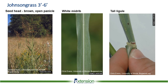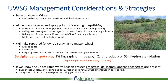Johnson grass is another undesirable that becomes obvious later in the season as it reaches three to six feet in height — it really sticks out and can be seen from a long ways away. It has a brown open panicle for a seed head, a very distinctive white midrib, and a tall ligule. Johnson grass is fairly easy to recognize, especially once it's mature.